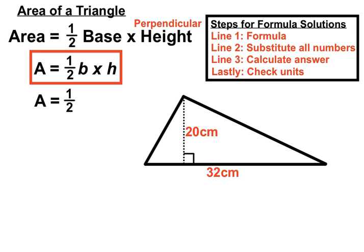Half the base times the height. Half of the base is 32. And the height is 20. The perpendicular height is 20. We'll do our calculation there and we'll get 320.